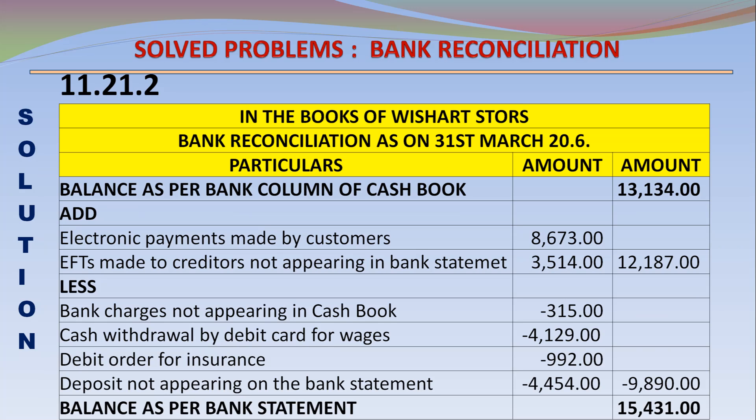In the books of Fish Art Stores — Bank Reconciliation as on 31st March. Particulars and amount: balance as per bank column of cash book 13,134. Add: electronic payments made by customers 8,673. Add: EFTs made to creditors not appearing in the bank statement 3,514. Total additions 12,187. Less: bank charges not appearing in the cash book 315. Less: cash withdrawal by debit card for wages 4,129.